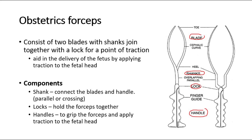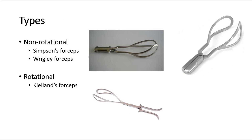There are a few types of obstetric forceps, which can be divided into non-rotational type and rotational type. The non-rotational type includes the Simpson's forceps and the Wrigley forceps. For rotational forceps, there is the Kielland's forcep, as shown in the picture below.